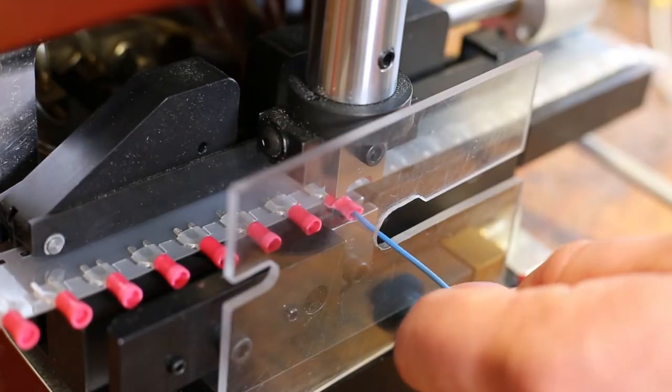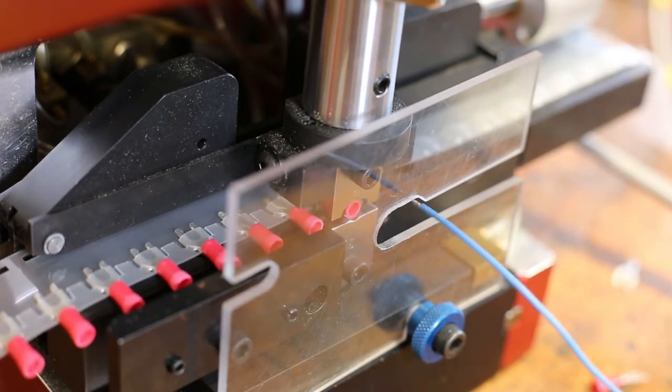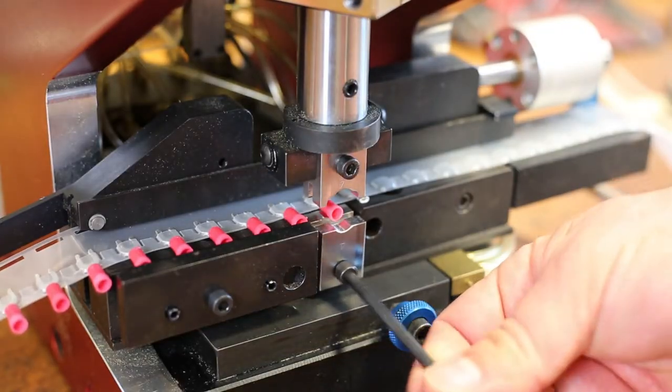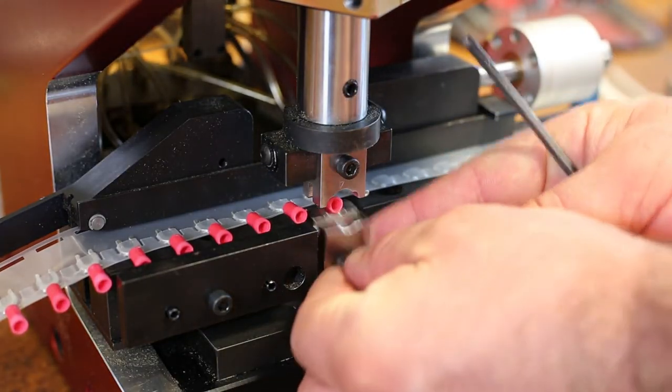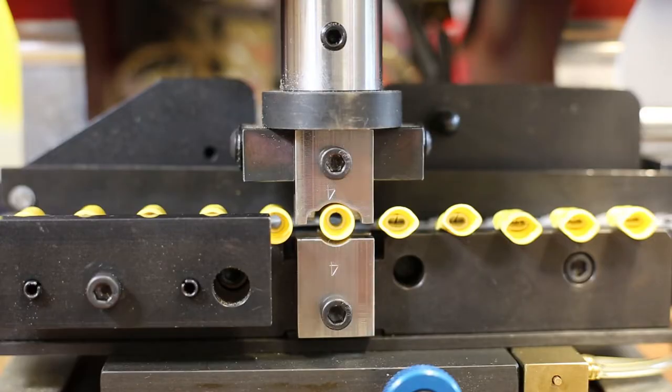The mylar feed will auto-advance after each crimp, and the ram will return to the terminal hold position. The OEM-175-TFM is equipped with a lockout safety mode to ensure you won't injure yourself while changing the dies or mylar feed. The emergency release button also allows you to abort the current crimp operation.